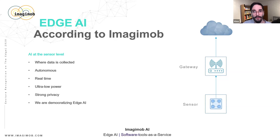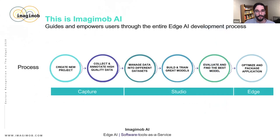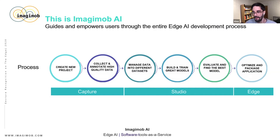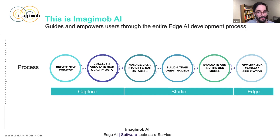We are democratizing this space. We believe more and more individuals and companies should be able to build these kinds of applications, because today only a few companies can. We do this through our software service Imagimob AI, which guides and empowers users through the entire Edge AI development process — all the way from setting up a new project, through collecting and annotating high-quality data with our Capture service, then into Imagimob Studio where you analyze and manage data into different datasets, build and train deep learning models, evaluate them, and finally optimize and package the application for an edge device.